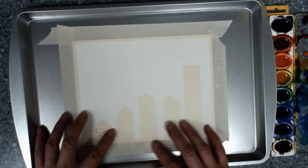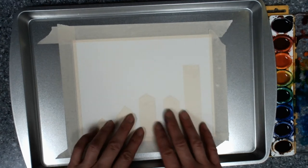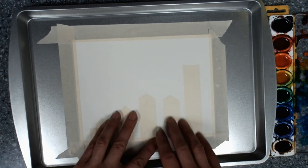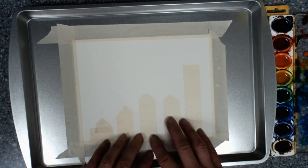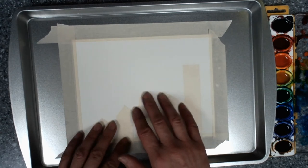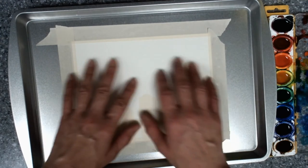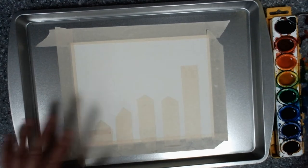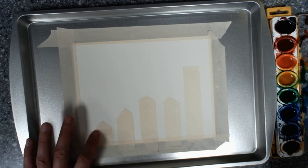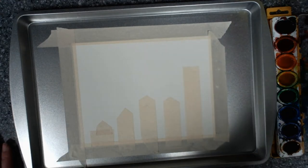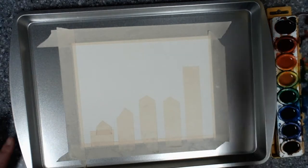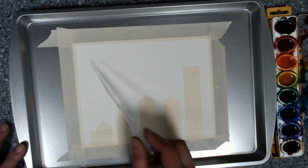So here we have the watercolor paper with tape all around it. And I put tape on it and some of the tape is flat on top. Some of the tape has kind of points, like, and those are going to be the roofs. The tape is the buildings and the points are the roofs. They're different sizes. This is masking tape and I've pressed it on, but not too hard.